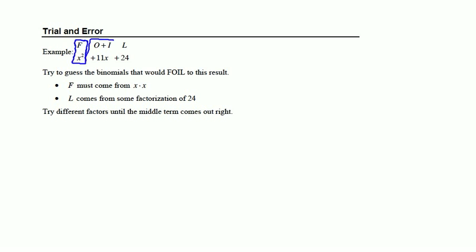Meaning that the first term would come from F in FOIL, the last term would come from L in FOIL, and the middle term is going to come from adding the outer and inner products.